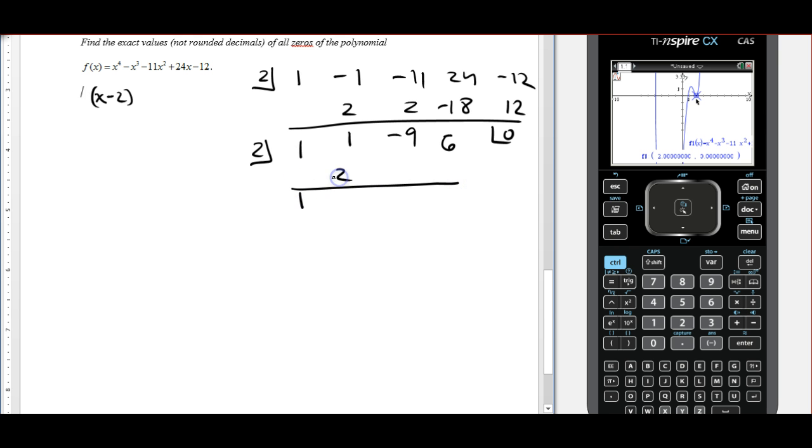I'll drop the 1 down, multiply, add, multiply, add. Wait, oh, 3, sorry, 6, negative 3, negative 6, and 0. And it worked.